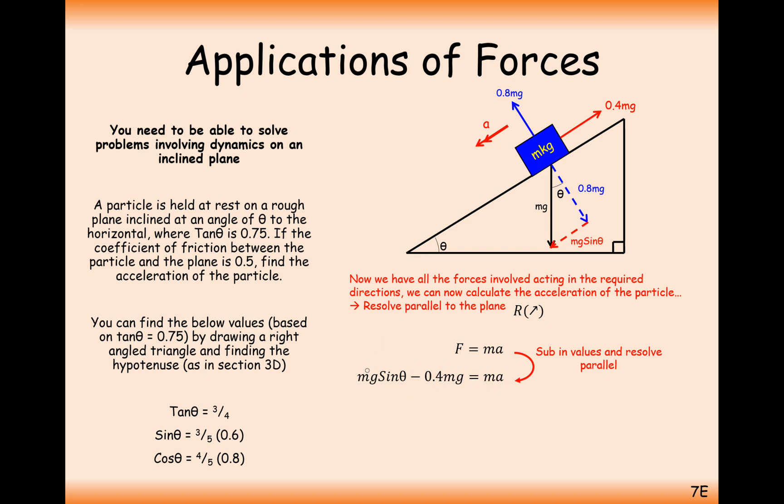And we can see here then that m's will all cancel out. So the fact that we didn't know the mass of the particle to start with doesn't actually matter because it will cancel out at this stage here. We can then work out the value of the acceleration by typing this all into my calculator. Remember, sin theta is 0.6 from what we did at the start. So we get here an acceleration of 2.0 meters per second squared. Excellent.